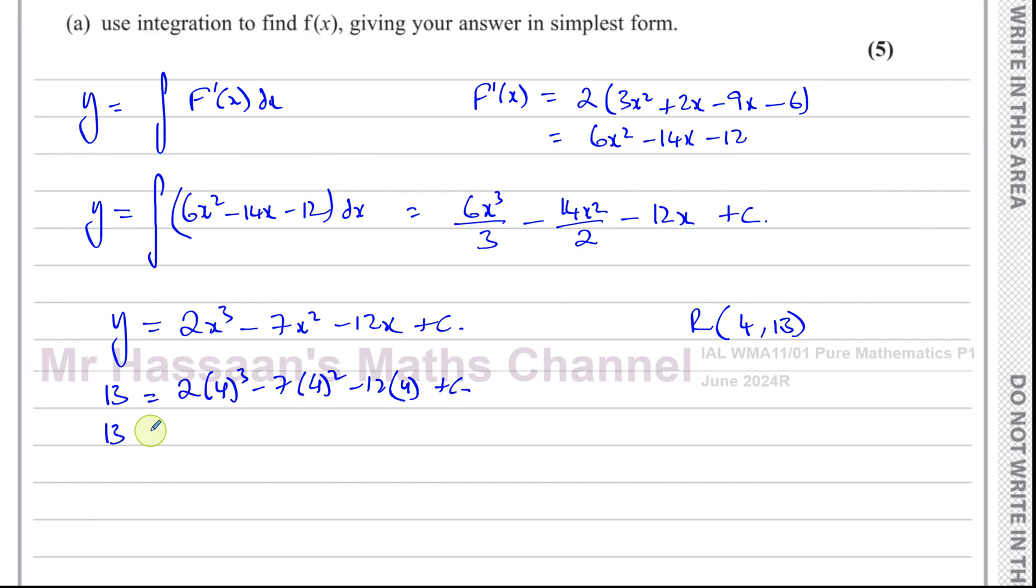That will give us the value of c if we simplify this. So you have 13, and this is going to be 64 times 2, because 4 times 4 is 16 times 4 is 64 times 2, that's 128. Minus 7 times 16, that's 70 plus 42, that's 112, minus 48 plus c.